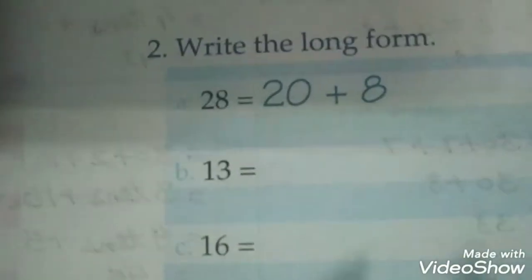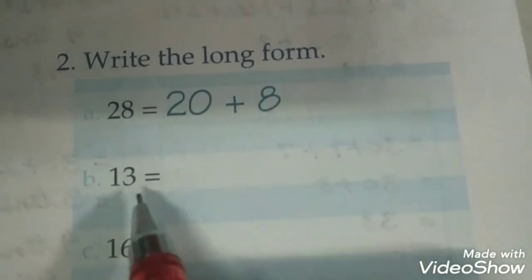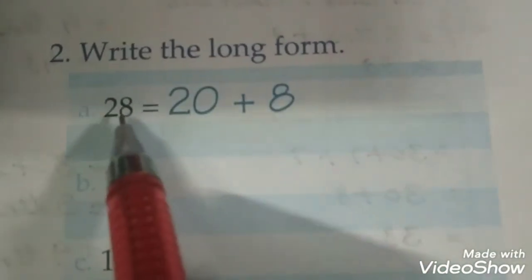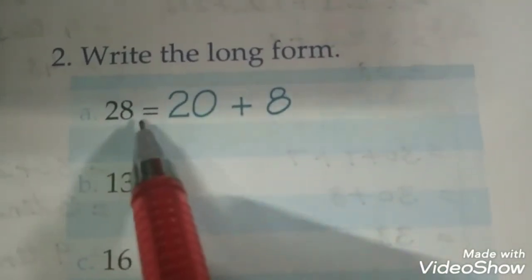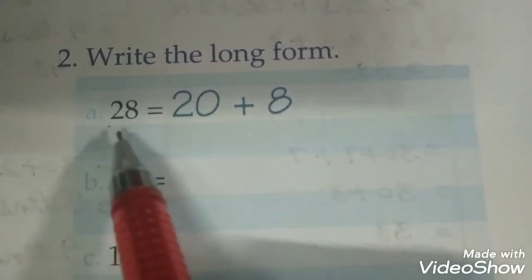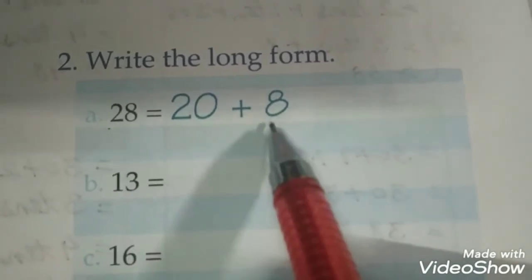And here we have to write the long form. Number humein diya hai, humein usse long form mein likhna hai. Like if you can see here 28. 28 ko kaise likha hai? This is 2 tens, 2 tens means 20, plus 8 ones hai, yahan likhenge hum 8. Let's solve this.